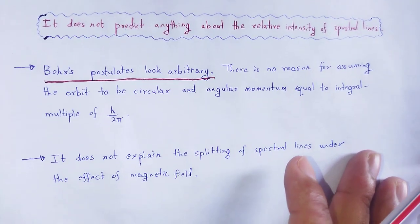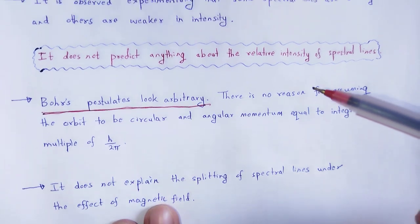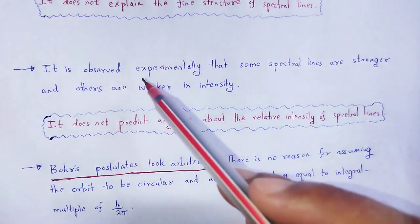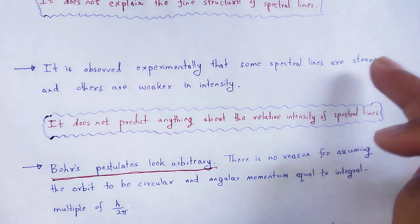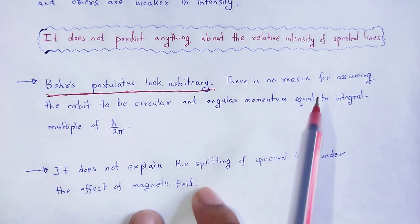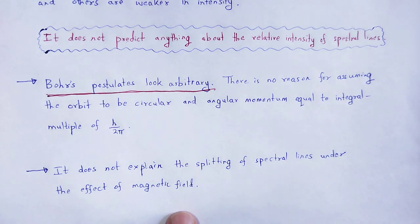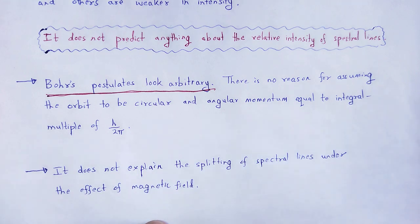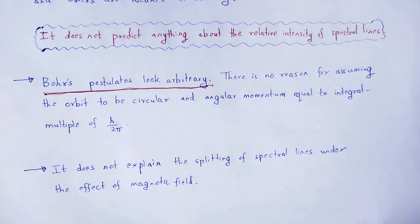Next, Bohr's model does not explain the splitting of spectral lines under the effect of a magnetic field. Experimentally it is clear that some spectral lines are stronger and others are weaker in intensity. When spectral lines are placed under a magnetic field or electric field, these spectral lines are split. But why these spectral lines are split is not explained by Bohr. These are some basic points which clarify the limitations of Bohr's atomic model.